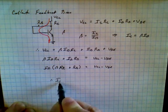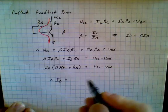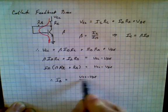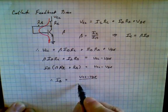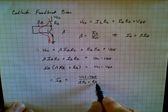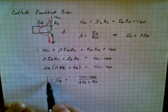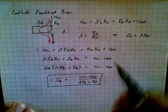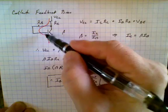Therefore, Ib is equal to Vcc minus Vbe divided by all of this, which is beta Rc plus Rb. So this equation over here defines the base current in this circuit here.